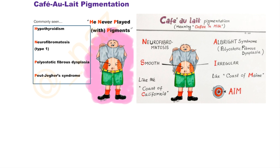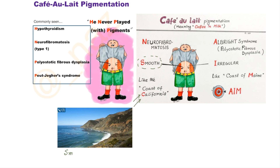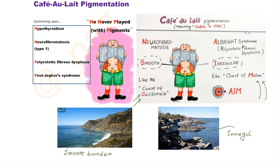Now here in this picture, you can see the outline or margin is different in two different diseases. In neurofibromatosis, the margin appears to be smooth, which resembles the outline of the coast of California. In contrast, café-au-lait pigmentation in Albright syndrome has an irregular outline like the coast of Maine, as you can see in this picture.